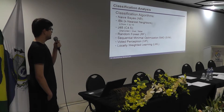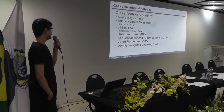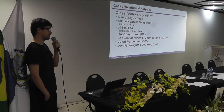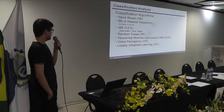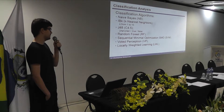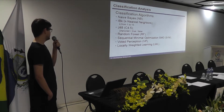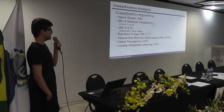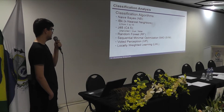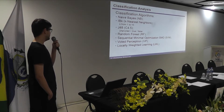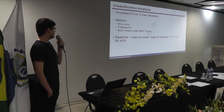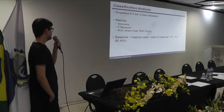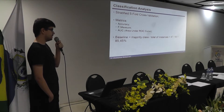For classification analysis, we used the following algorithms: Naive Bayes; IBk, which is Weka's implementation of k-nearest neighbors, varying the k parameter from 1 to 15; J48, Weka's implementation of C4.5, varying the unpruned parameter between true and false; Random Forest; SMO, Weka's implementation for support vector machines; Multilayer Perceptron; and Locally Weighted Learning. As the validation method, we used stratified 5-fold cross-validation, and we also used accuracy, F-measure, and area under the ROC curve to evaluate the results.